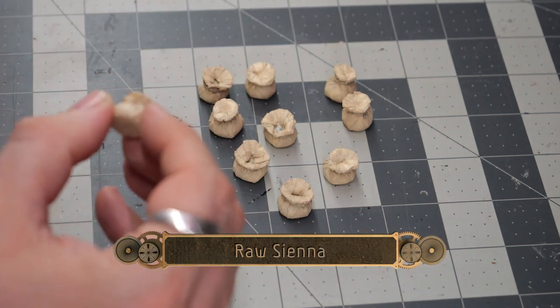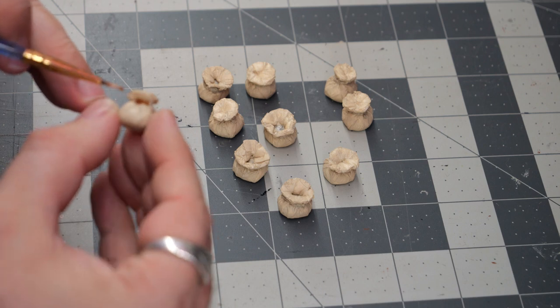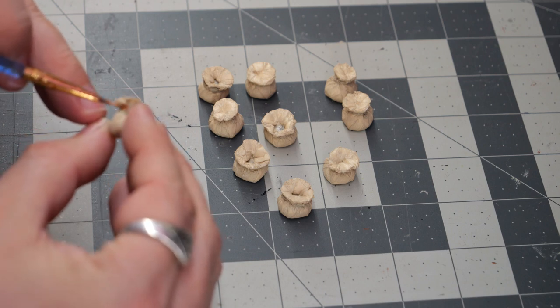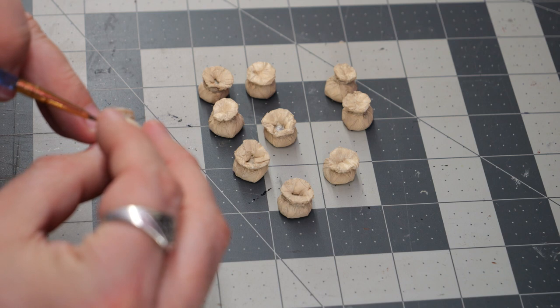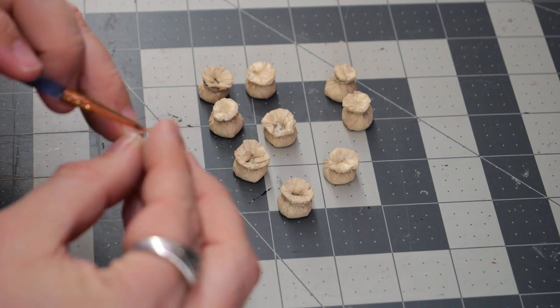Okay, so now the twine kind of got covered up through all of that, so we're going to use some raw sienna to paint over it. And this will give the rope a rope-like appearance. Yeah, it sounds weird to me too.